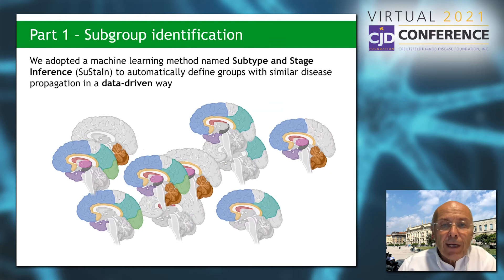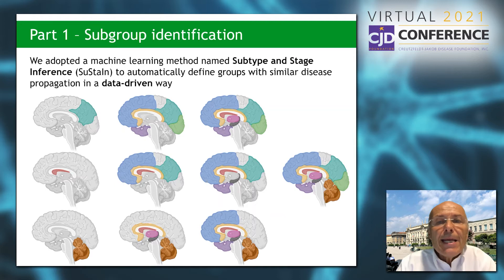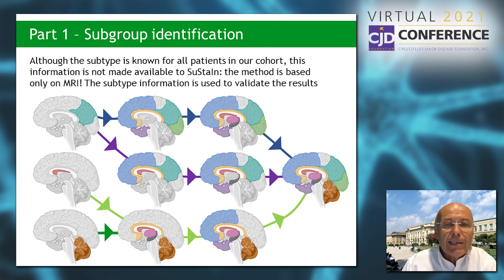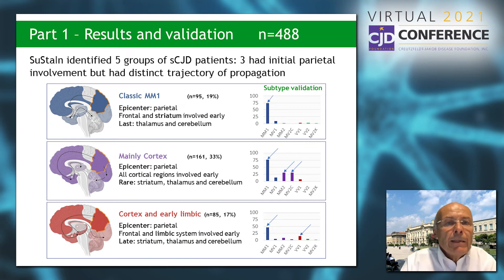If you follow this animation, what the computer does is try to identify how many groups of patients we have with similar disease propagation, and then follow the propagation of the lesion. Starting from one group of patients, you can see the progression of the lesion according to that group, and from another patient you have another type of propagation, and so on.